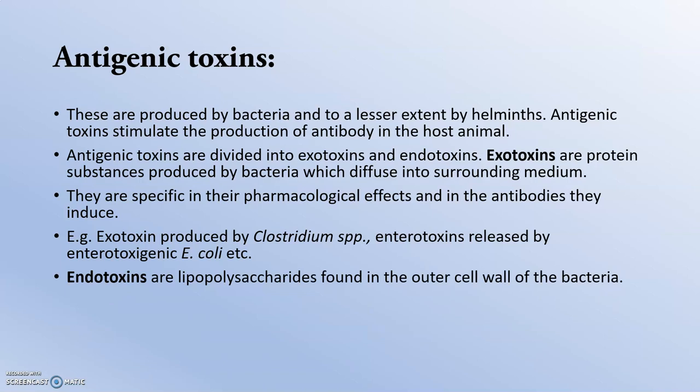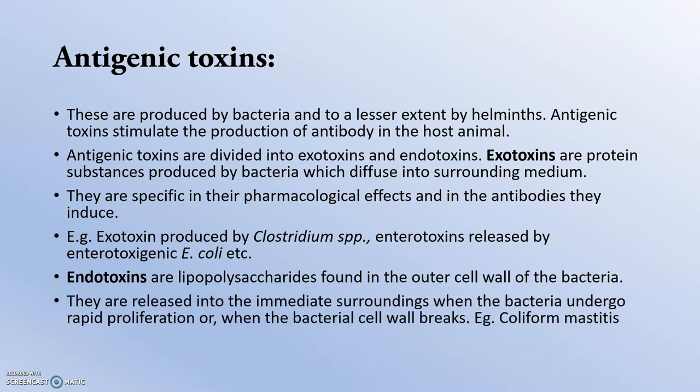Endotoxins are lipopolysaccharides found in the outer cell wall of bacteria. They release their lipopolysaccharides, which act as endotoxins. These are released into the immediate surroundings when bacteria undergo rapid proliferation or whenever the bacterial cell wall breaks — mainly in the case of coliform bacteria.